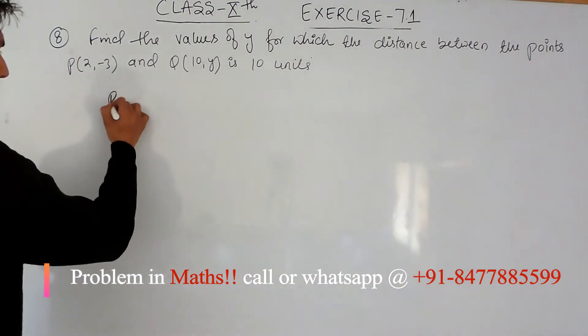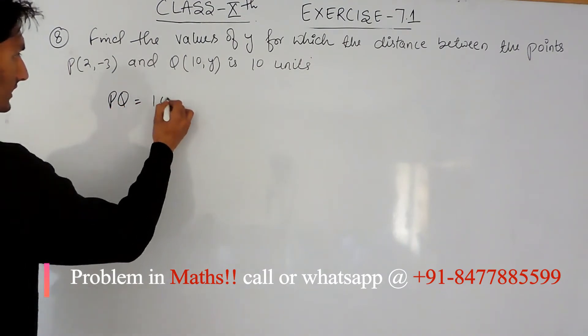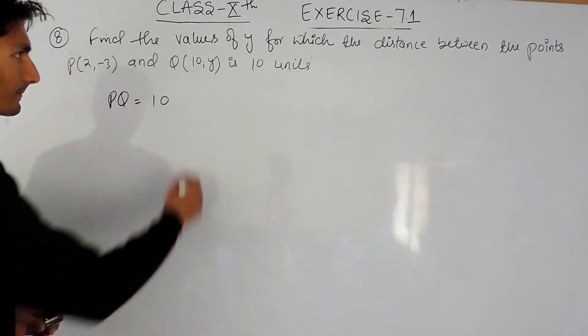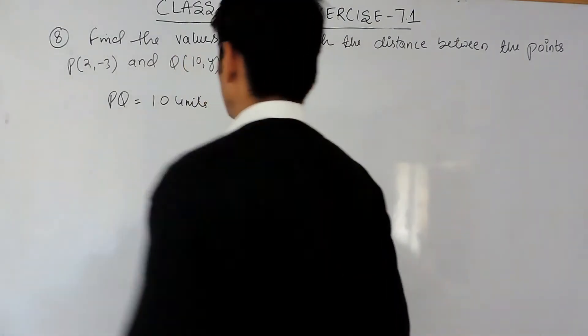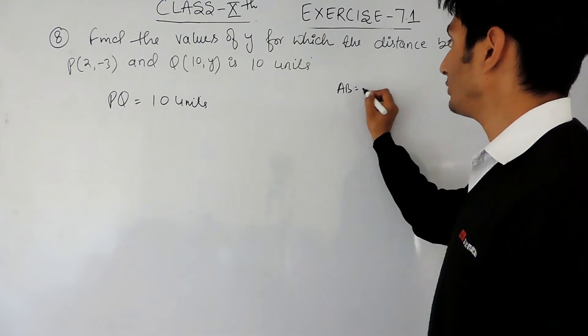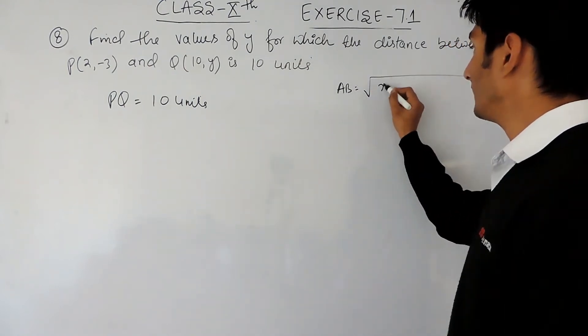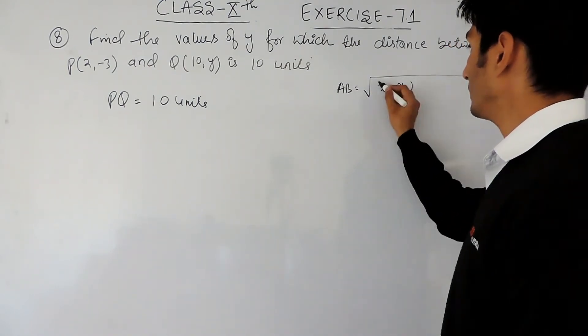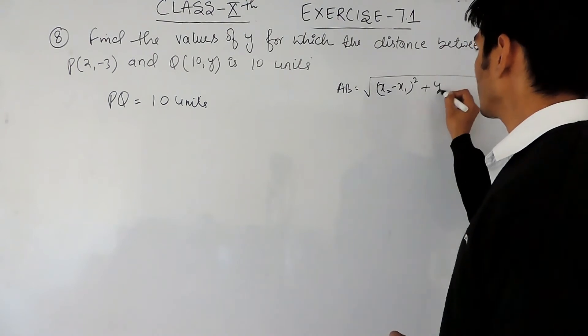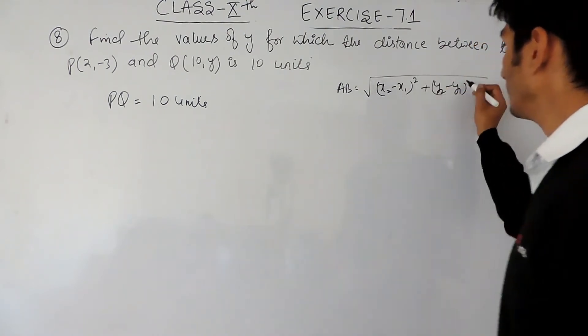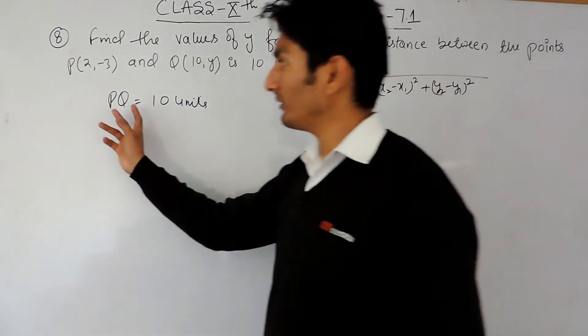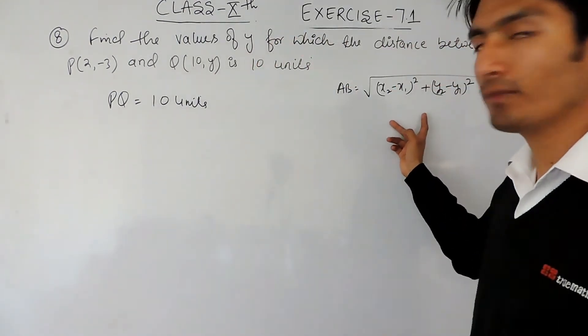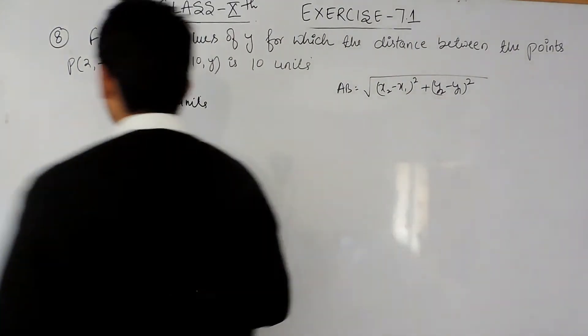The distance between P and Q is given to us as 10 units and we know that to find the distance between any two points we have a formula: x2 minus x1 whole square plus y2 minus y1 whole square. We have to find the distance between P and Q using this formula and that will be equal to 10 units.